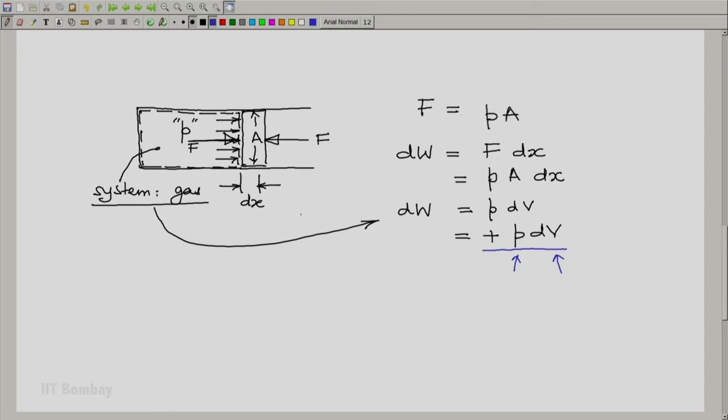The system is gas, surrounding is the piston. And here you will notice that initially when the piston is at rest with the force of the gas on the piston and the externally applied force in balance, no work is done. If the external force relaxes a bit, the piston will expand and the system will do work on the surrounding.